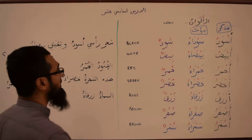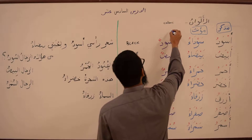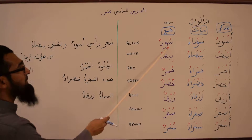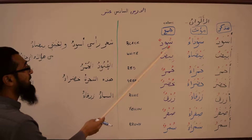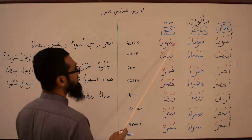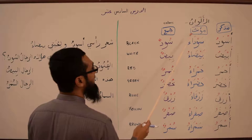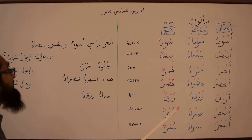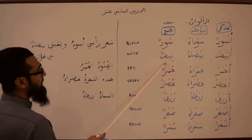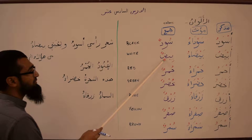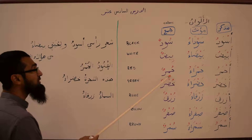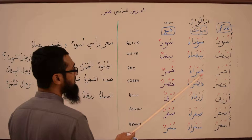And there's the plural as well — this is the jam'. The plural is the same for both the masculine and the feminine. Sood means black, so it's the plural of Aswad and Sawda. Beed is the jam', the plural of Abiyad and Bayda. Then Humer is the plural of Ahmar and Hamra.